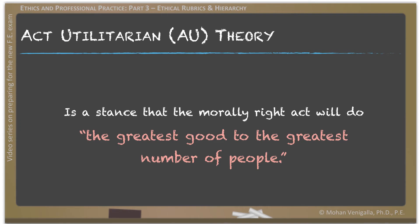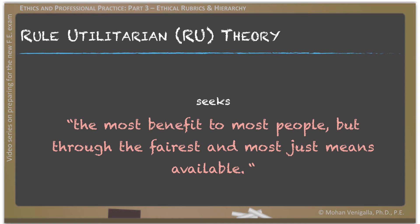Act utilitarian theory is a stance that the morally right act will do the greatest good to the greatest number of people, regardless of personal feelings or societal constraints such as existing laws. Rule utilitarian theory is another variation — it seeks to benefit the most people but through the fairest and most just means available. The added benefits are that it values justice and includes beneficence at the same time.